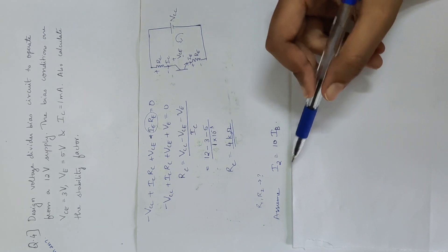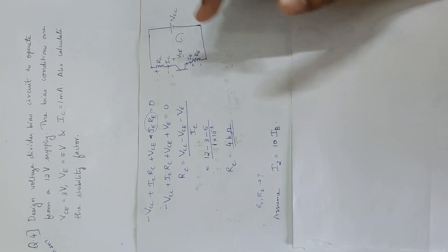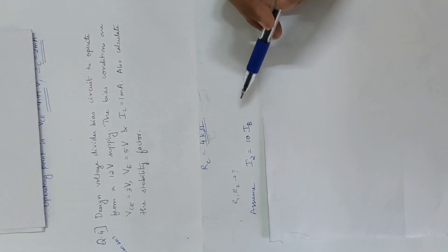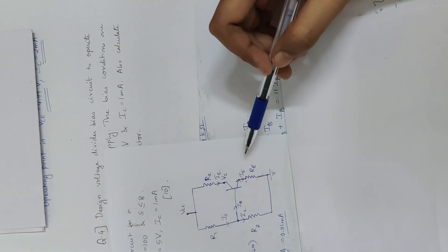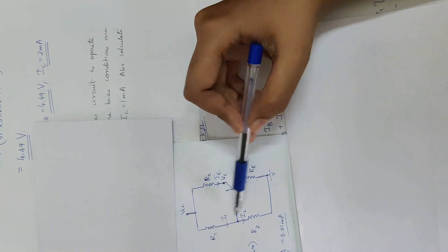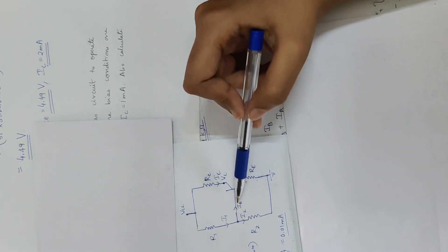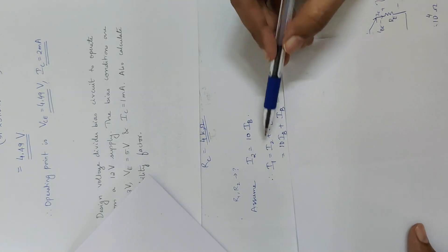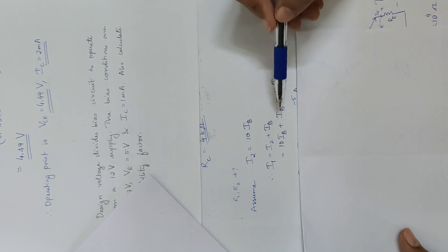We write the assumption directly: I2 is equal to 10·IB. Then I1 is equal to I2 plus IB. Substituting I2 equal to 10·IB: 10·IB plus IB equals 11·IB. So I1 equals 11·IB.